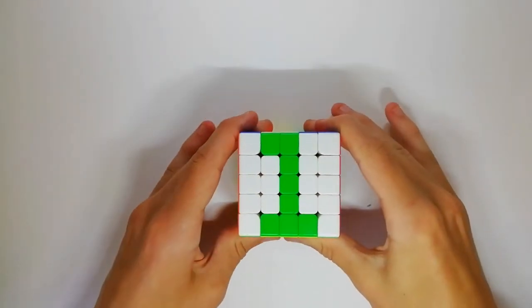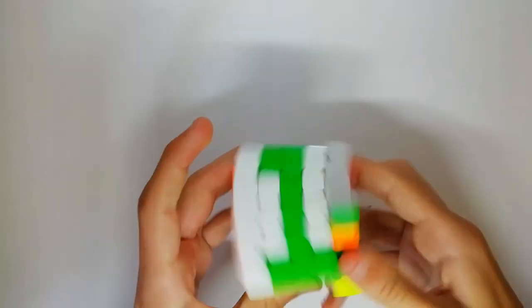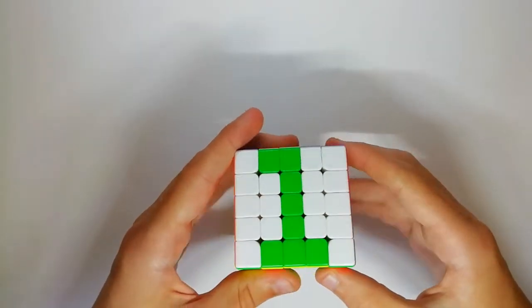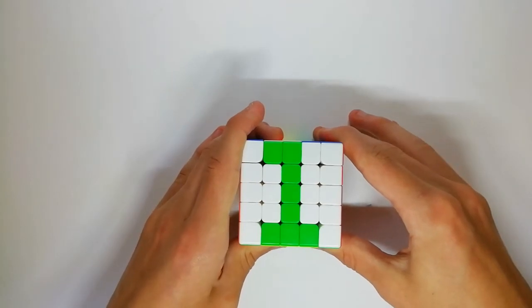But in 1st place we have the Yuxiuang WRM. It has basically all the corner cutting you'd expect on a flagship 5x5 and is actually slightly cheaper than the Valk 5 at only £32.